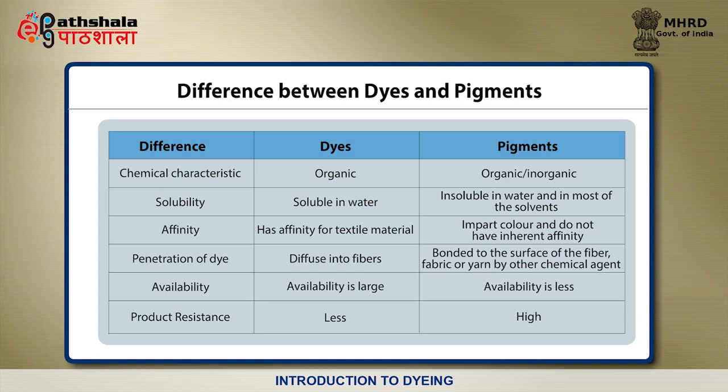Based on affinity, dye has affinity for textile material whereas pigments impart color and do not have inherent affinity. Based on the penetration of dye, dyes diffuse into the fibers whereas pigments are bonded to the surface of the fibers by other chemical agents. Based on availability, dyes are available in large quantities whereas pigments are available in lesser amounts. Based on product resistance, dyes have very less product resistance whereas pigments have high product resistance.